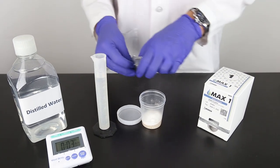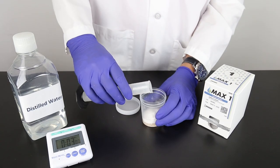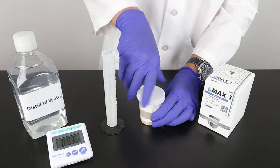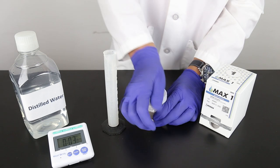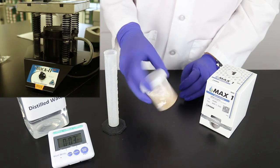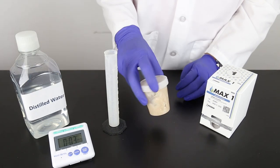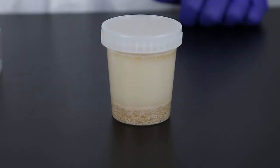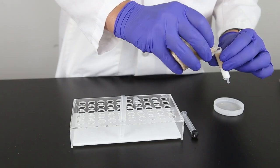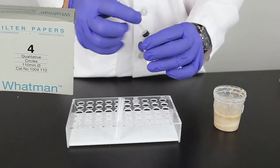Weigh out the sample, add the MAX-1 packet, then add the distilled water. Vigorously shake for three minutes using hand or mechanical means. Allow sample to settle and filter with a filter syringe or Whatman No. 4 filter paper.